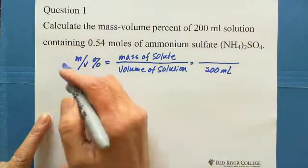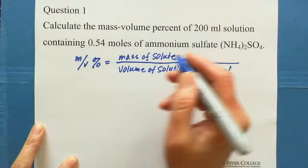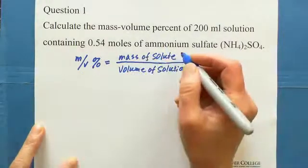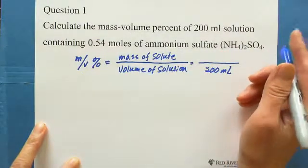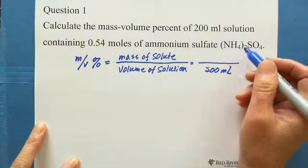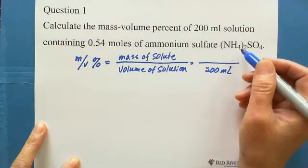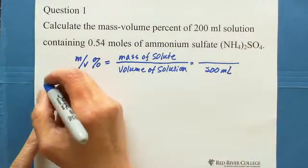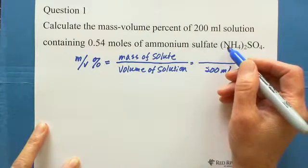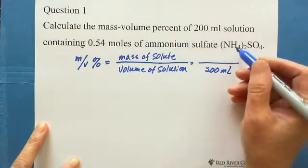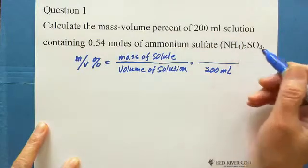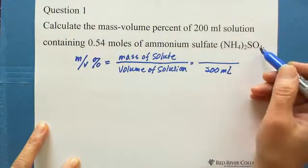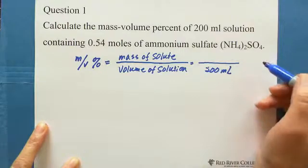We need to first calculate the total mass for one mole of ammonium sulfate. In (NH4)2SO4, there are 2 nitrogen, 8 hydrogen, 1 sulfur, and 4 oxygen.